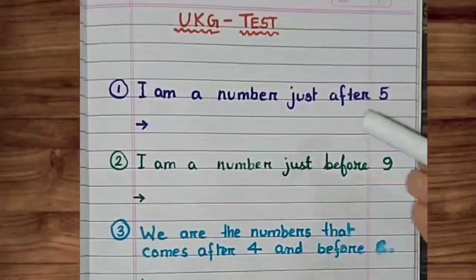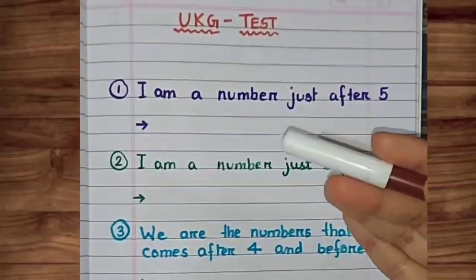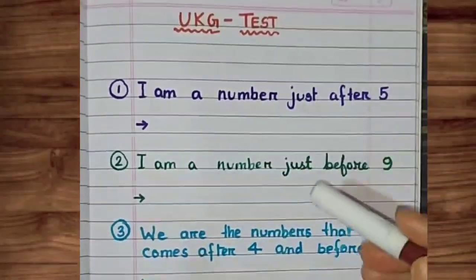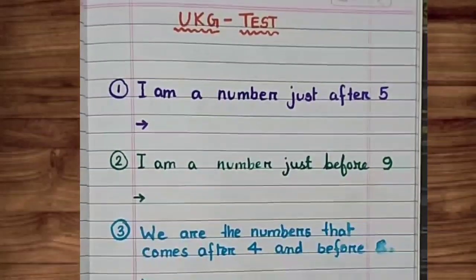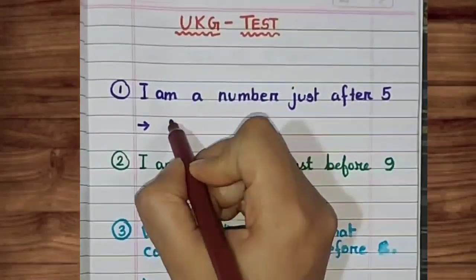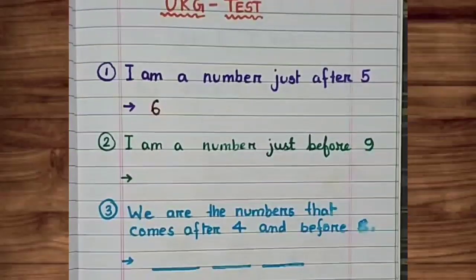In the first question, I am a number after 5. What is the number after 5? It is 6, number 6.